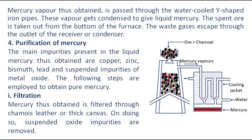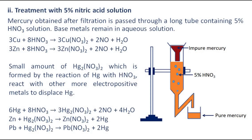The following steps are employed to obtain pure mercury. Filtration: Mercury is filtered through shammy leather or thick canvas. On doing so, suspended oxide impurities are removed.